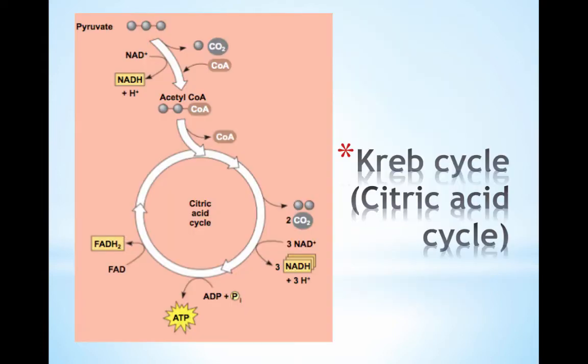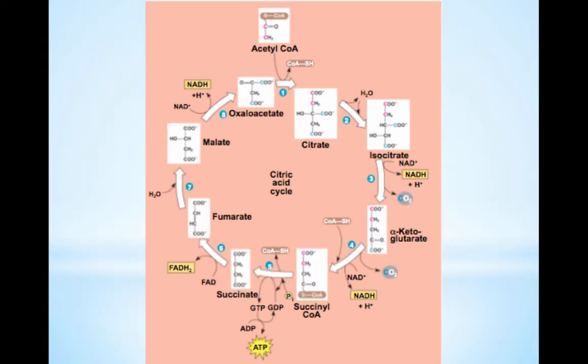Acetyl coenzyme A is a high-energy fuel molecule for the Krebs cycle. Two molecules of acetyl coenzyme A enter the Krebs cycle. The Krebs cycle was named for German-British researcher Hans Krebs, who figured out this cyclical phase of cellular respiration in the 1930s. Only the two-carbon acetyl part of acetyl coenzyme A participates. Coenzyme A helps the acetyl fragment enter the cycle, then splits off and is recycled. The cycle completely disassembles acetyl coenzyme A, stripping away its electrons and casting off two carbon atoms as CO2 for every acetyl fragment that enters.